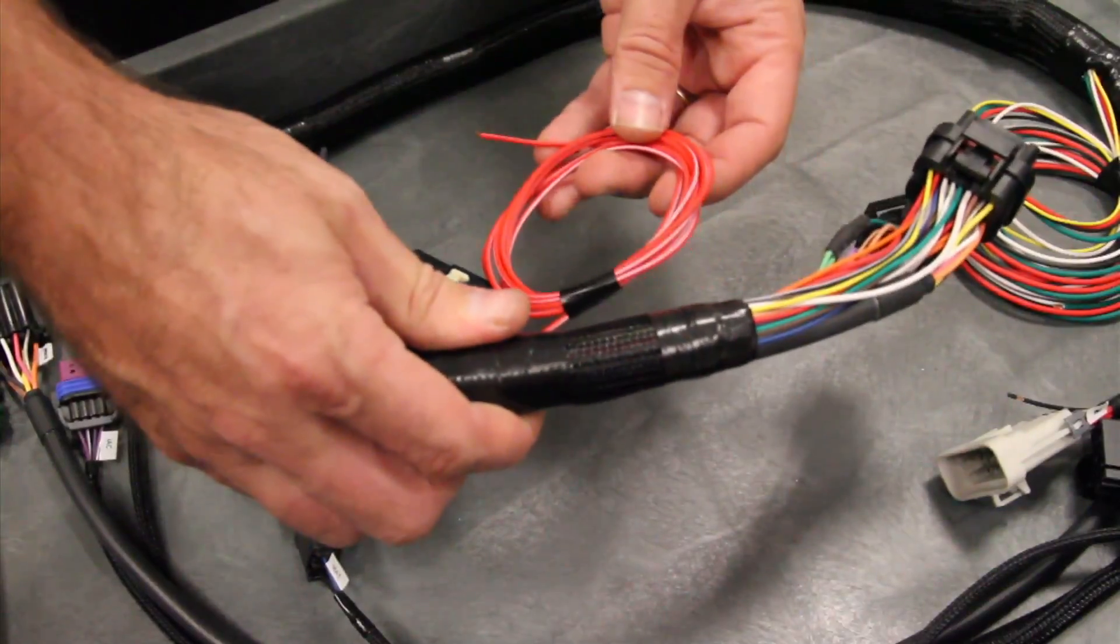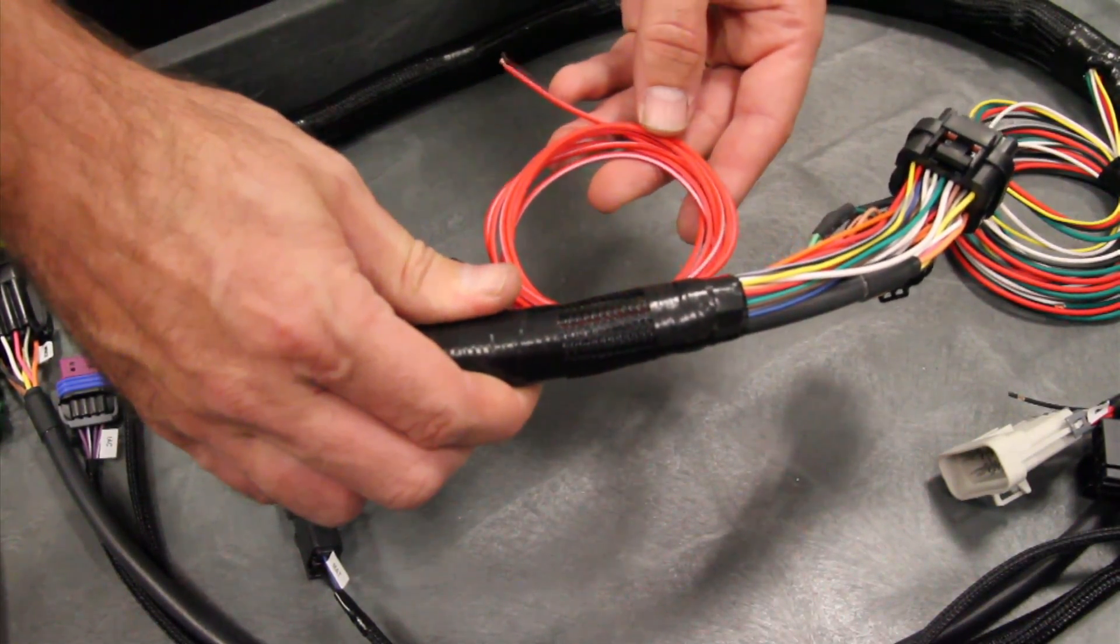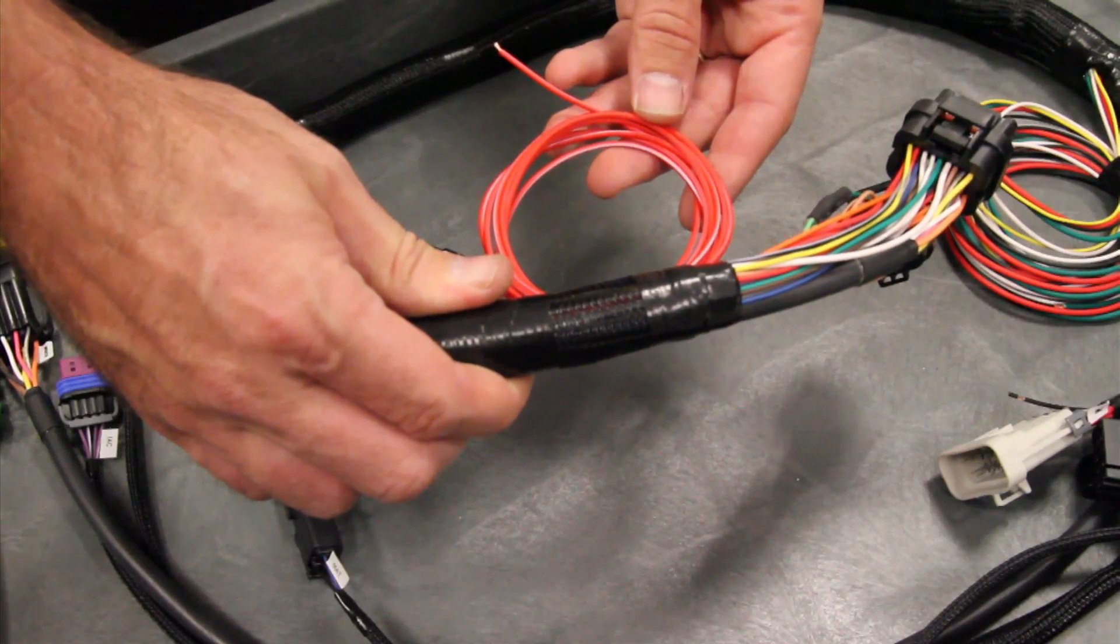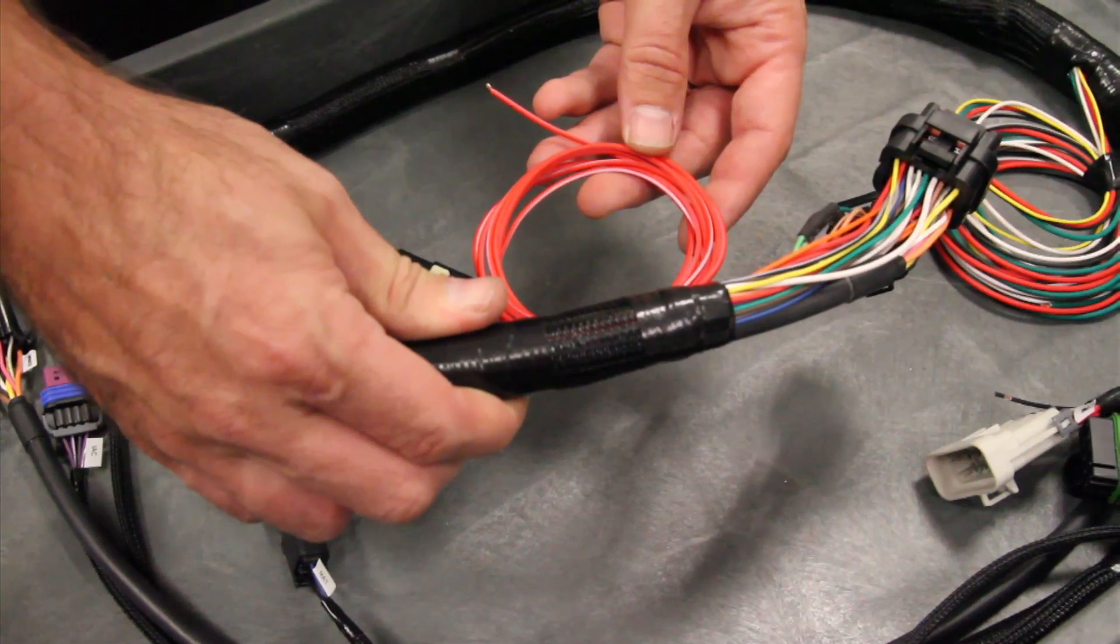This loose wire here, which is red with a white stripe, needs to go to a switched ignition power source. This power source must be active when the key is in the run position, but also importantly in the cranking position.